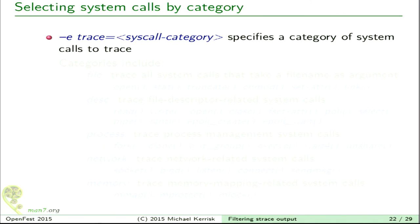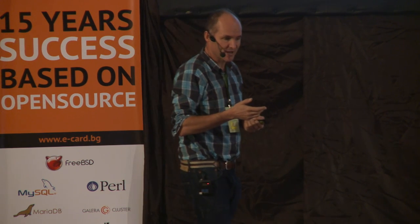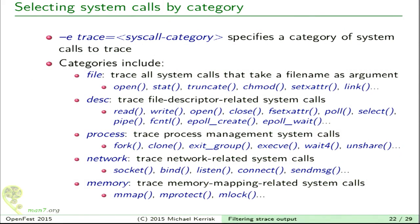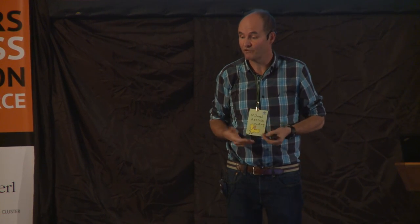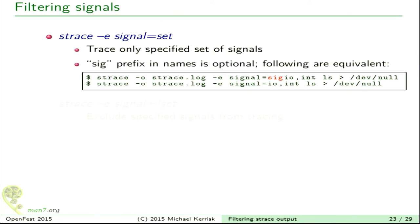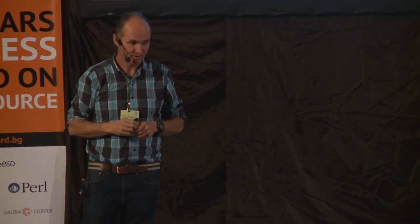The trace= option also has system call categories. You can say trace=file to show all system calls relating to files, trace=desc for file descriptor operations, or network operations, or process creation operations — there are about eight to ten different categories. You can also use the -e option to filter signals: say -e signal= and the name of a signal or several signals to choose which signals strace traces. There's also a negation syntax to trace all signals except certain ones.